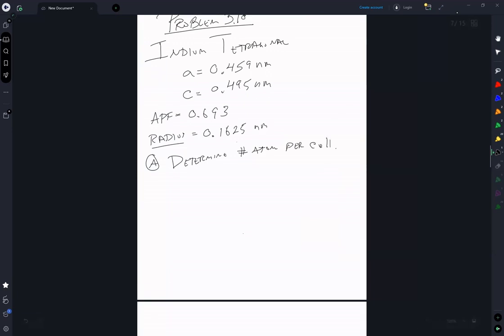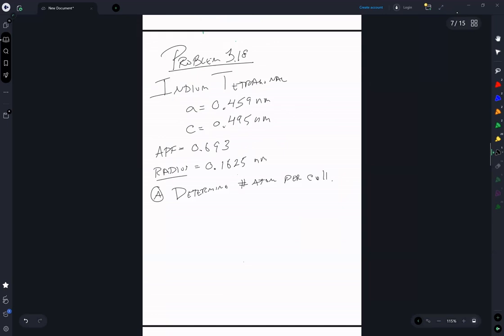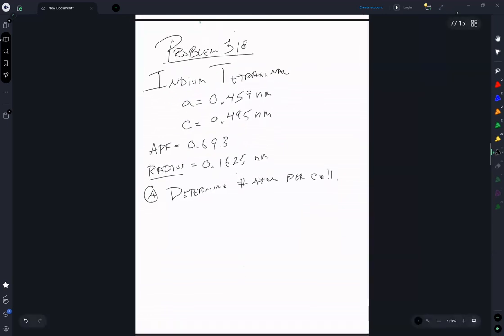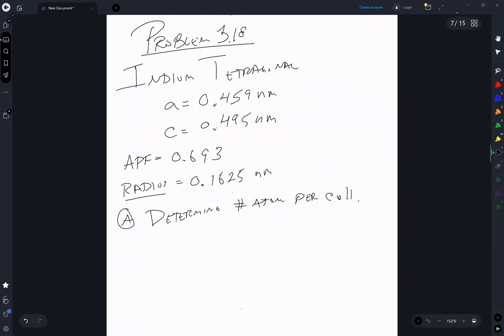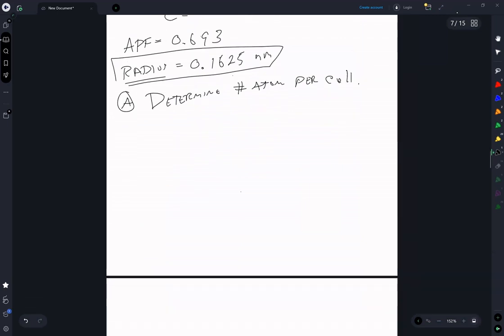This is very much a textbook problem because if you're measuring it, it's a lot easier to measure the density than it is to measure the atomic radius. But nonetheless, we're determining the number of atoms per unit cell.